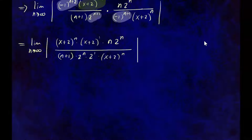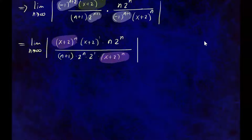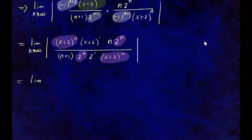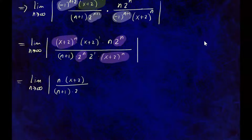Now we do some simplification. The x plus 2 to the n cancels with the x plus 2 to the n below, and the 2 to the n terms also cancel out. So what we're left with is the limit as n approaches infinity of n times x plus 2 to the 1 in the numerator, and n plus 1 times 2 in the denominator.